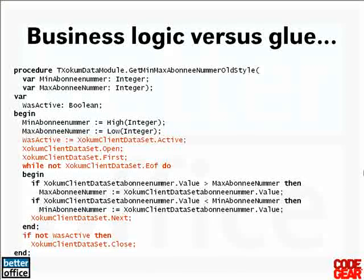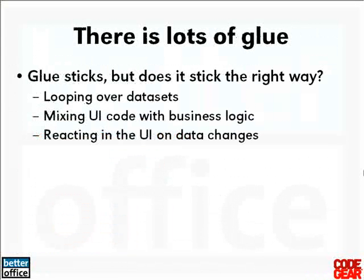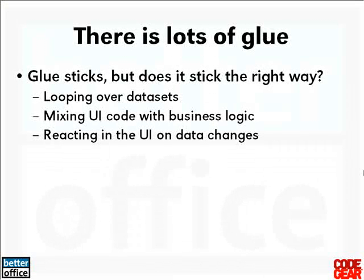But the real goal for you is to find out where your glue is and where your business logic is, and if the percentage of glue is not as crazy as this, learn how to decrease that percentage of glue and learn ways to do it the best way. Glue is present in a lot of places — for instance, this case is looping over datasets. But there are plenty of applications that mix their user interface with their business logic code.